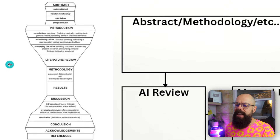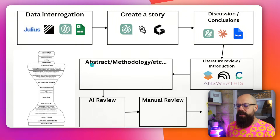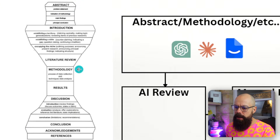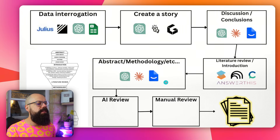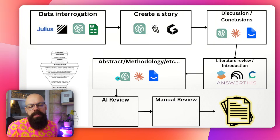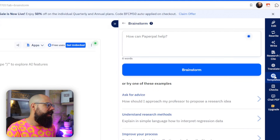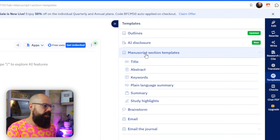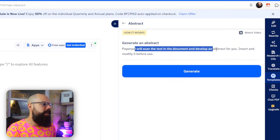Once you've done the literature review, you've set the basis — you've got results, discussion, and conclusion. Now it's all the other stuff: abstract, methodology, et cetera. These are all writable in something like PaperPal or your favorite large language model. In PaperPal, you can go to manuscript section templates, choose 'abstract,' and it will scan the text in the document and develop an abstract for you. You write what you want to write, and it generates the abstract after you've got the bulk of the document done.